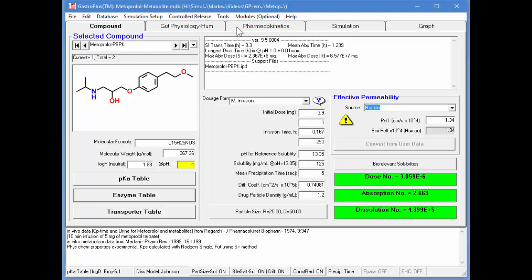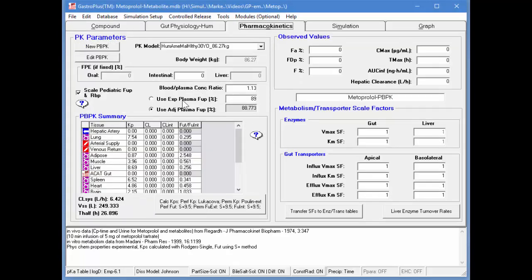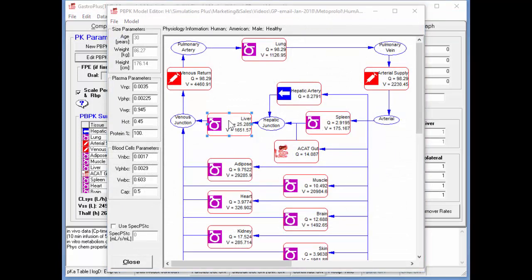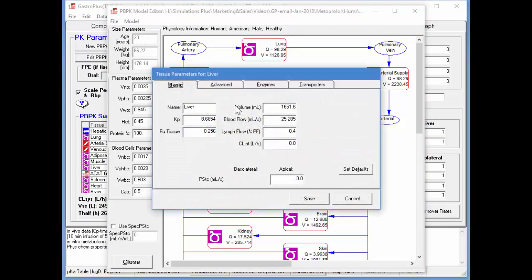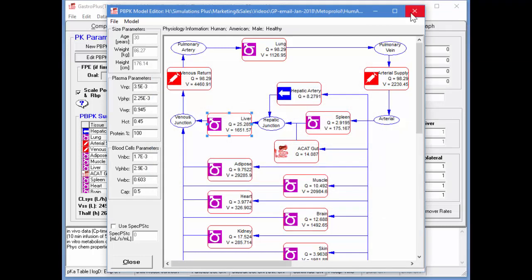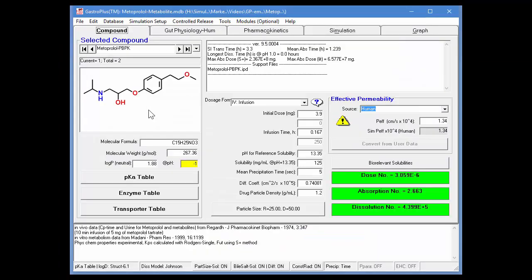The expression levels for 2D6 are already set up in the PBPK model. If you need to modify this, you would go into Edit PBPK, go into the liver compartment and the enzymes, and you'll see that this is specified for 2D6. I'll now close these two boxes.